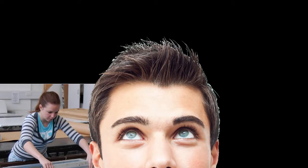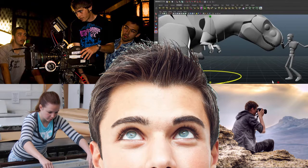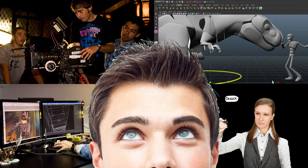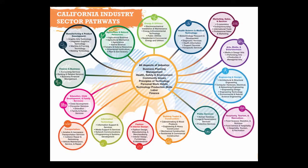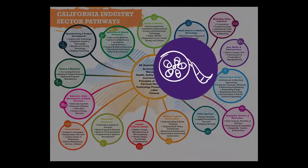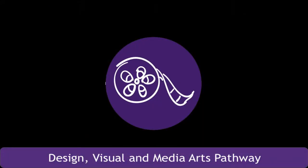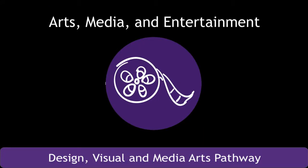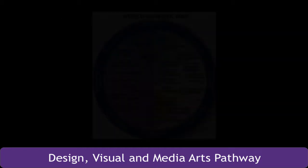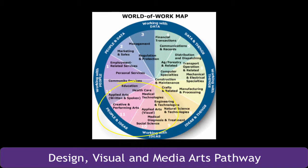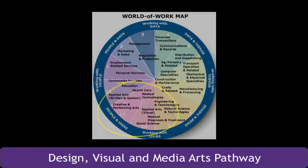Animator, web designer, game designer — so how do you start your journey to a profession, a career in design, visual, and media art? It begins by choosing a pathway. The California Department of Education has identified 15 industry sectors and 58 pathways based upon the type of work done. The design, visual, and media pathway falls under the arts, media, and entertainment industry sector — people with professions in this sector are associated with the arts and work with people and ideas.